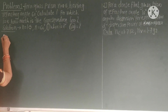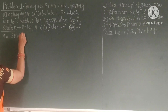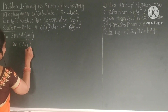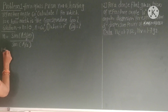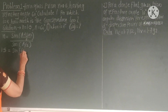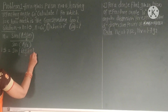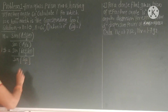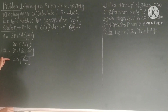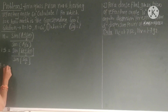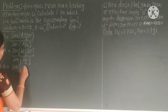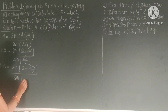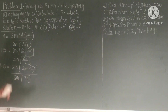We use the prism formula: n is equal to sin of (A + δm)/2 divided by sin of A/2. Substituting the values: 1.5 equals sin of (60 + δm)/2 divided by sin of 60/2. Now 60/2 is 30, so it becomes sin of (30 + δm/2) divided by sin 30.